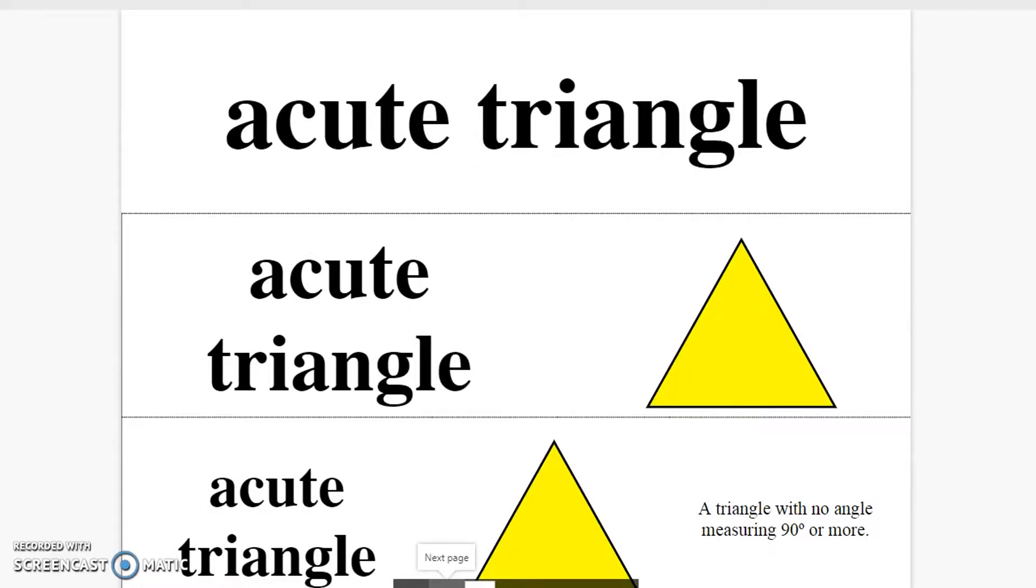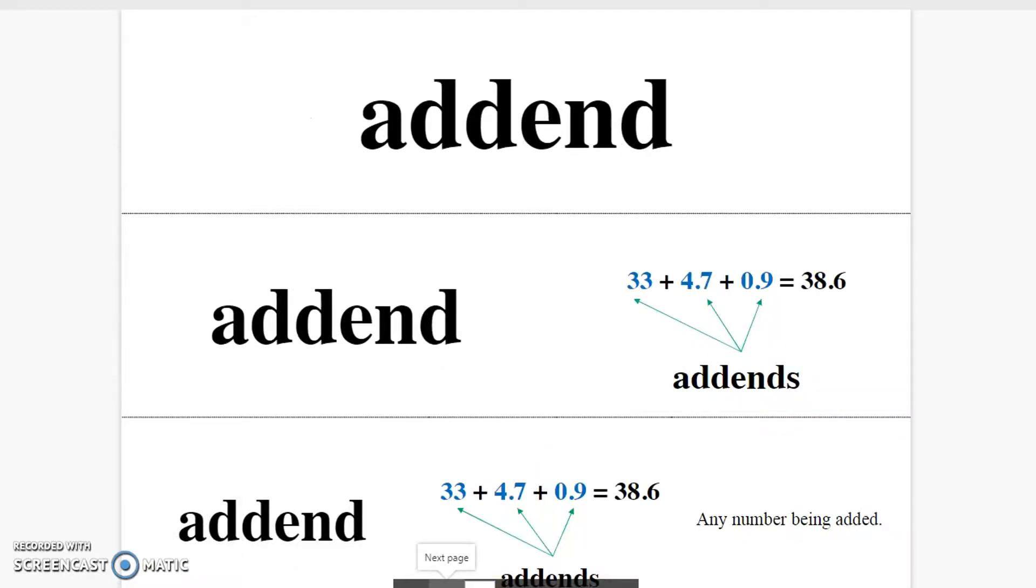Acute triangle. A triangle with no angle measuring 90 degrees or more. Addend. Any number being added.